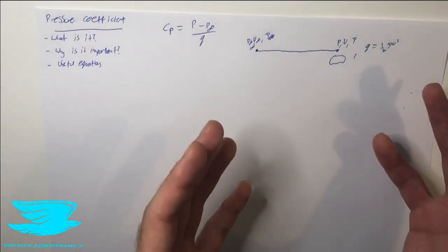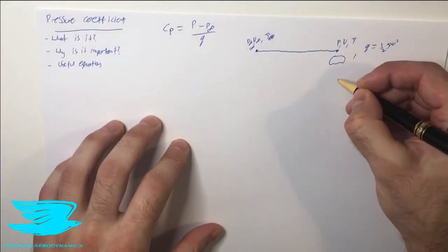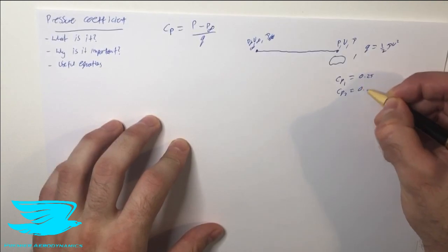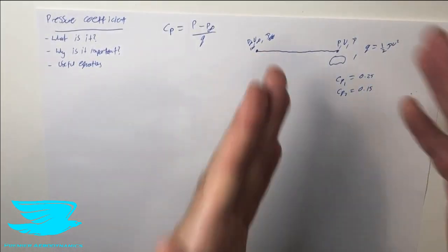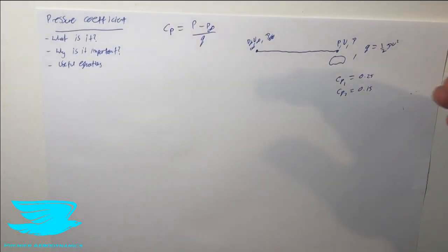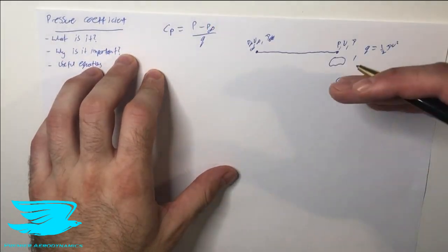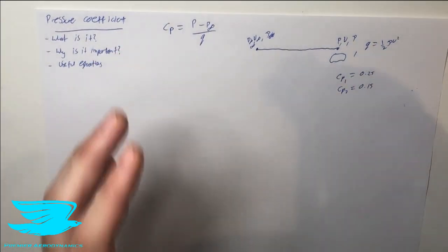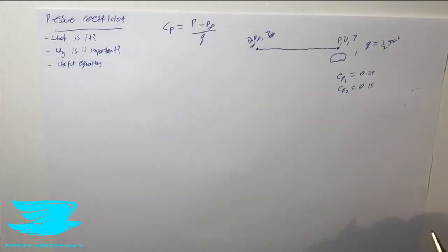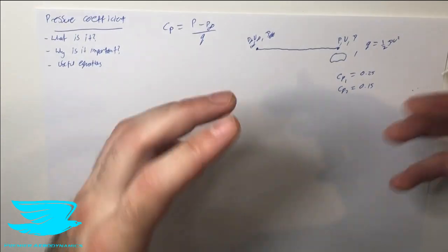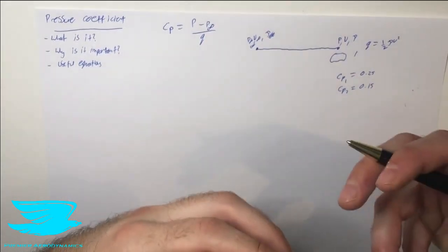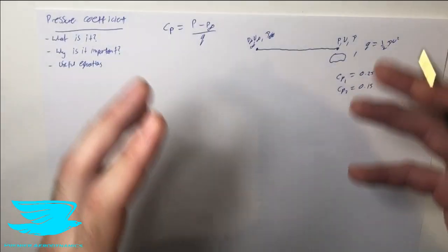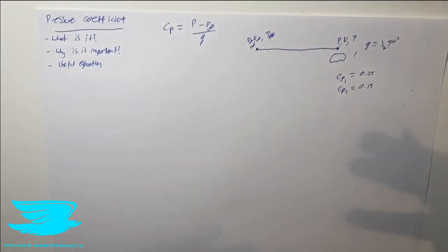That means we can compare two different situations and say the pressure coefficient in situation one is 0.25 and situation two is 0.15 — so the pressure coefficient is much greater for situation one than situation two, even though the delta P or dynamic pressure may differ. So it gives us a way to compare two different situations with different velocities. The reason we pick dynamic pressure is because it is that reserve of energy that can create or reduce pressure — that's what the pressure in the flow really hinges on, other than the static pressure it starts at.